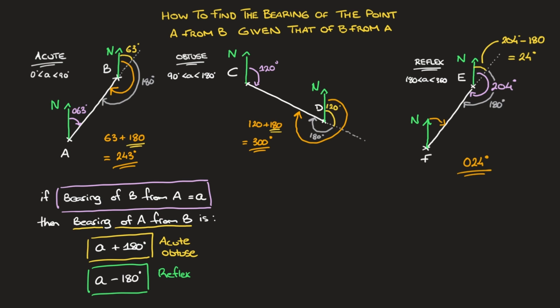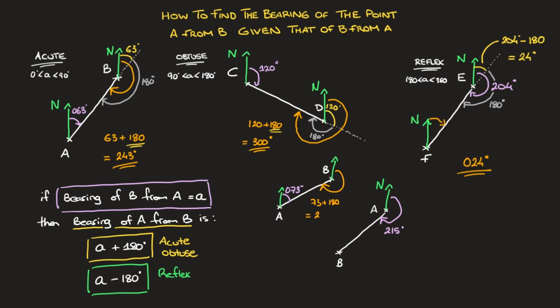Let me show you how quickly we can use these formulas. In the first quick example, the bearing of B from A is 73 degrees — an acute angle — so the bearing of A from B is 73 plus 180, which equals 253. In the second example, the bearing of B from A is 215 degrees — a reflex angle — so we use the second formula: 215 minus 180 equals 35 degrees, written as 035. We now know how to find the bearing of point A from point B given the bearing of point B from point A.